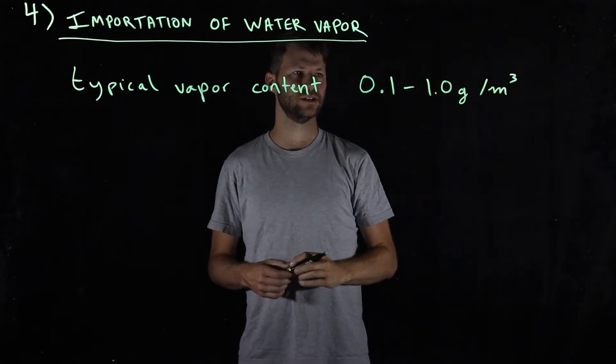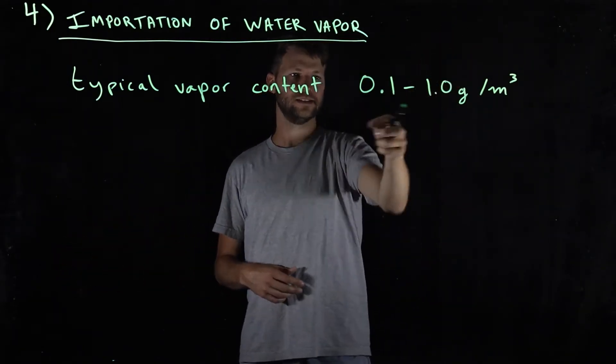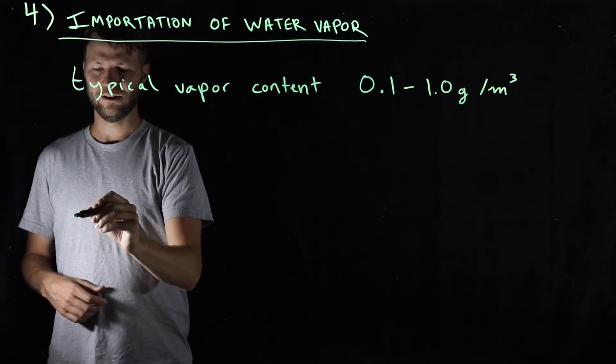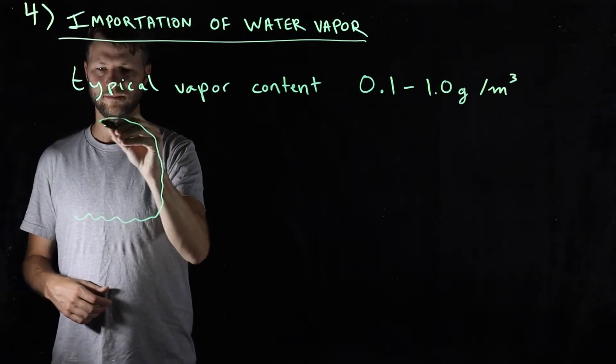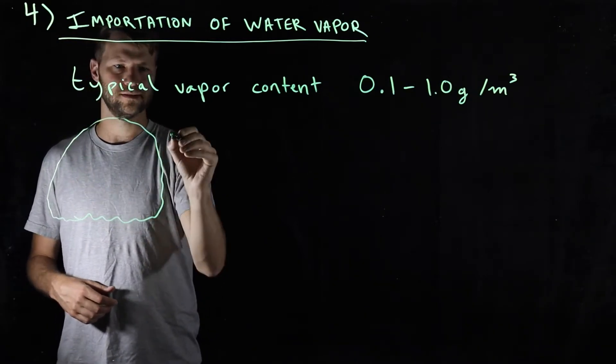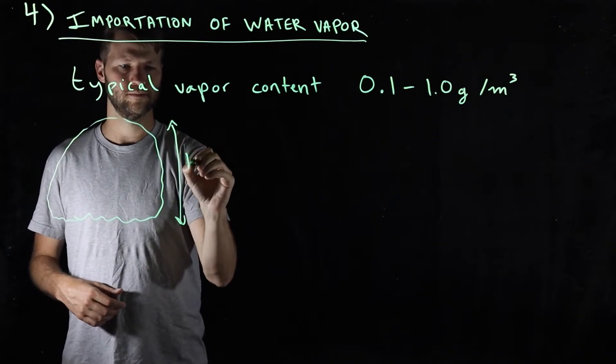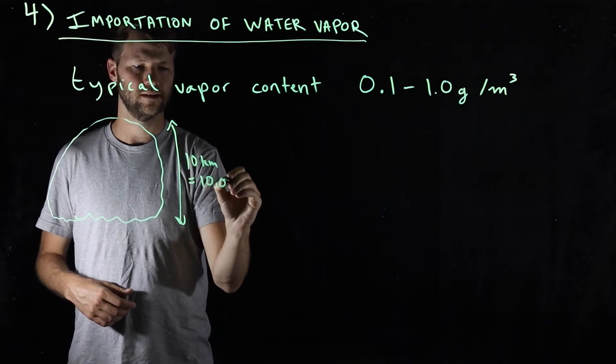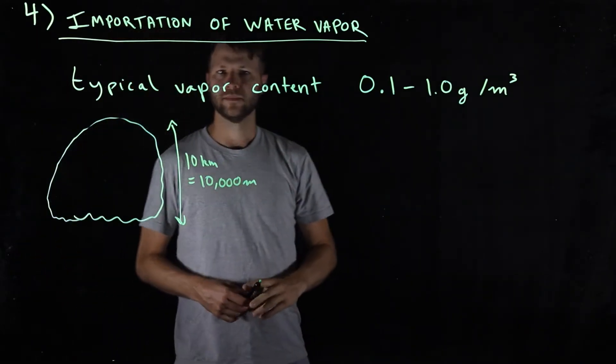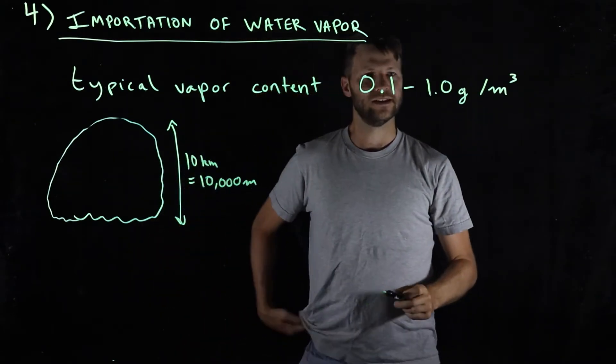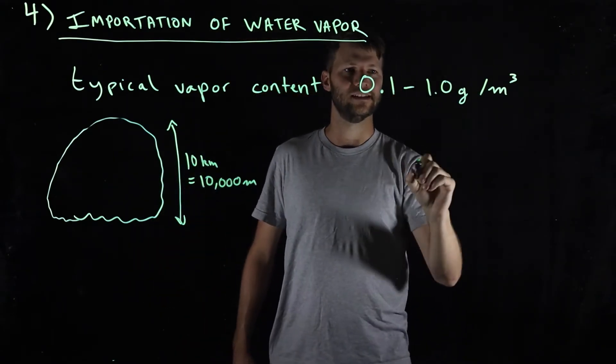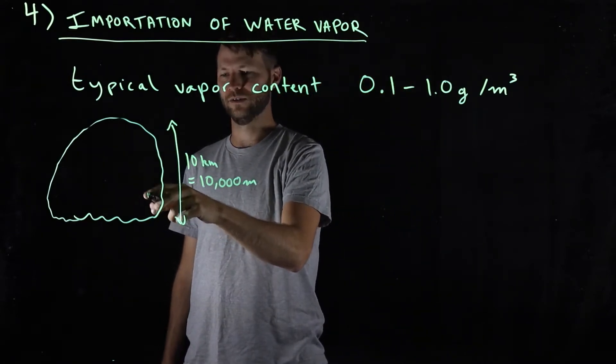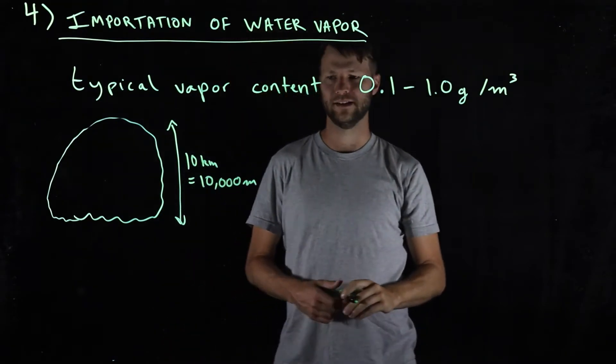That is, if we were to just take the molecules of water in a cubic meter, this is how much it would weigh. Consider, for example, a cloud that's about 10 kilometers tall, or 10,000 meters. Let's go on the generous end and say that there was 1 gram of liquid water equivalent, or of water molecules, per cubic meter in here.